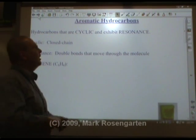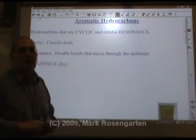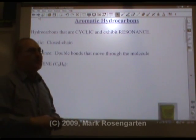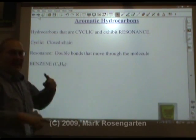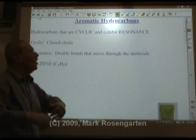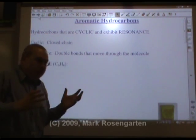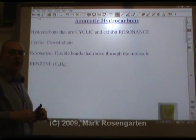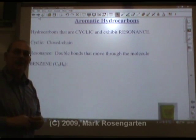We've spent some time talking about aliphatic hydrocarbons, now let's look at aromatic hydrocarbons. Hydrocarbons that are cyclic — they're in a circle — and have what's called resonance. Cyclic means closed chain; resonance means double bonds move throughout the molecule.